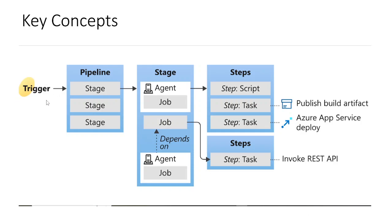Looking at the flow of this diagram: first we have a trigger. A trigger tells a pipeline to run — you can imagine it as an entry point of execution. Once a trigger fires, then comes our pipeline. A pipeline is made up of multiple stages — it can be either a single stage or multiple stages. A pipeline can also be deployed to one or more environments.